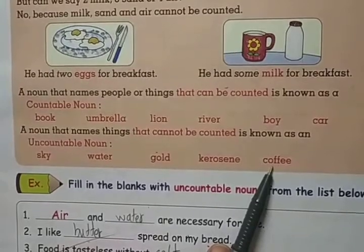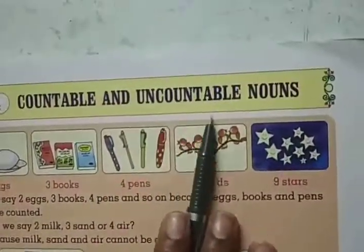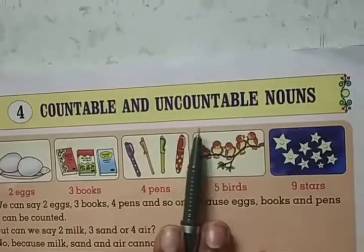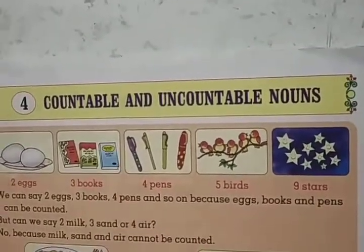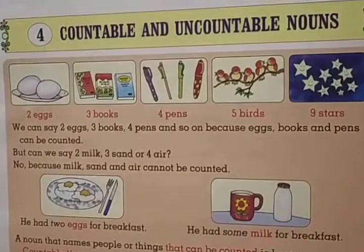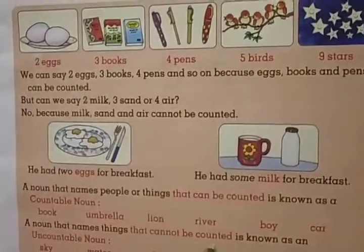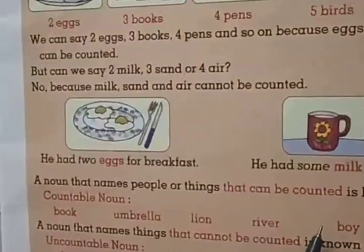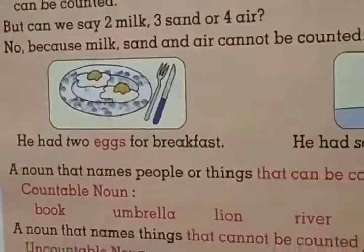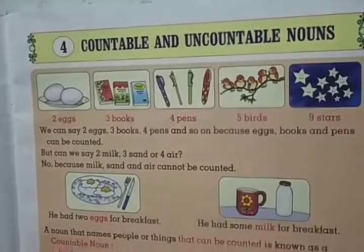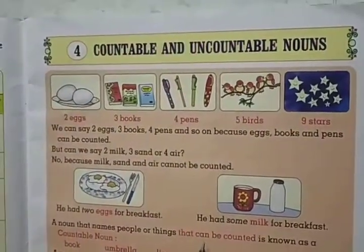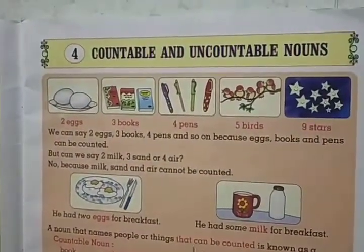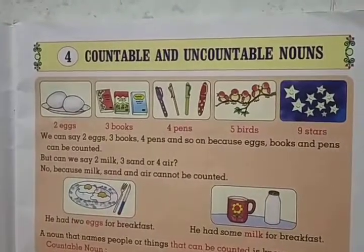So I hope you understood countable and uncountable nouns. The things or objects we can count are known as countable nouns. And the things and objects that we cannot count are known as uncountable nouns. I will send you homework in the PDF file.